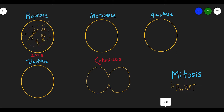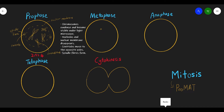In prophase, the chromosomes will condense and become visible under the light microscope. Previously the chromosomes are loosely coiled and not condensed, but when condensed they become shortened and thickened. The nucleus and nuclear membrane will disappear, and the centriole will move to the opposite pole — meaning the left and right sides of the cell. The spindle fiber begins to form.